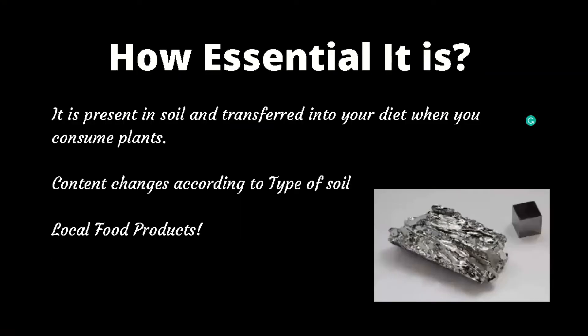Molybdenum is a natural soil particle which is absorbed through plants. From the northern Gangetic plains down to the red soils of the south, you have different types of soils. Locally, you have different food sources available, and if you consume those local foods, your body gets that amount of molybdenum.